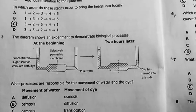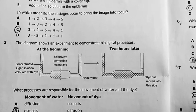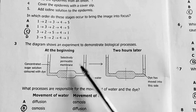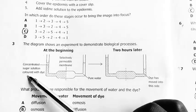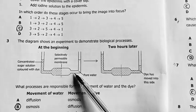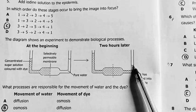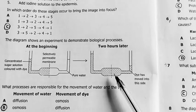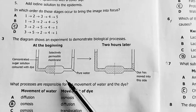Number 3, the diagram below shows an experiment to demonstrate biological processes at the beginning and after 2 hours. At the beginning, look at the levels there. The solute on this side, sugar solution colored with dye. Here, this is pure water. After 2 hours, the level here is higher than this other level here. And the solute or the dye seems to be on both sides of the membrane, of the selectively permeable membrane.